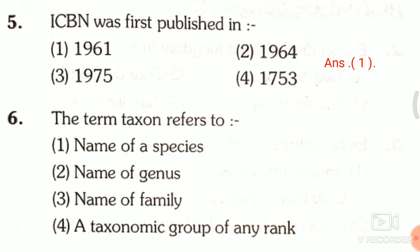Question 6: The term taxon refers to — first, name of species; second, name of genus; third, name of family; fourth, a taxonomic group of any rank. The answer is the fourth one, that is a taxonomic group of any rank.